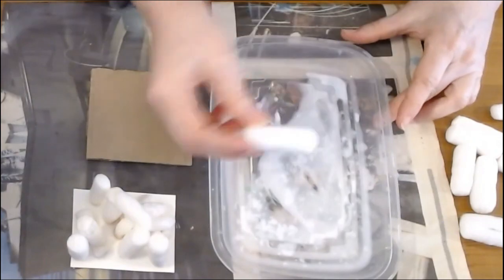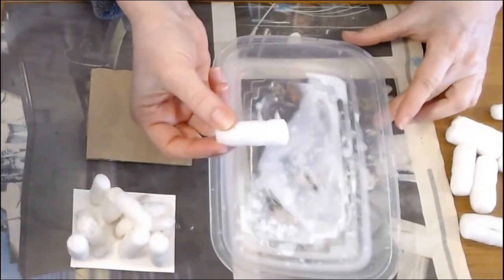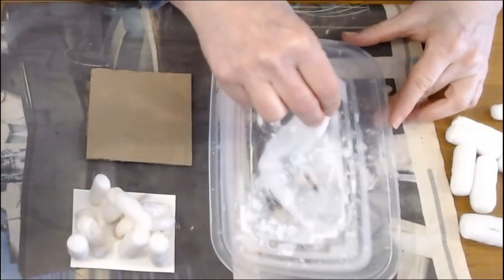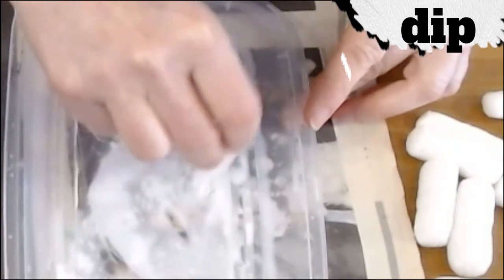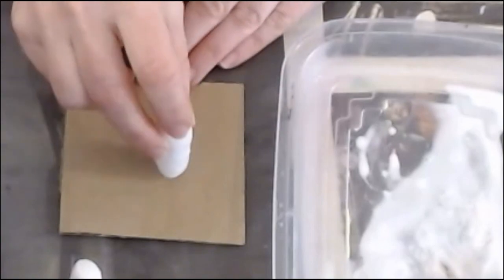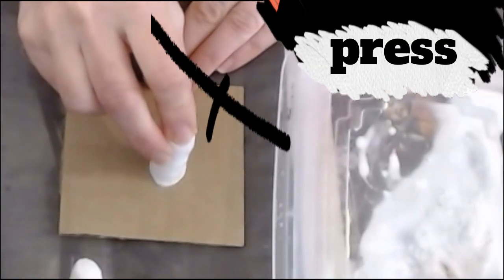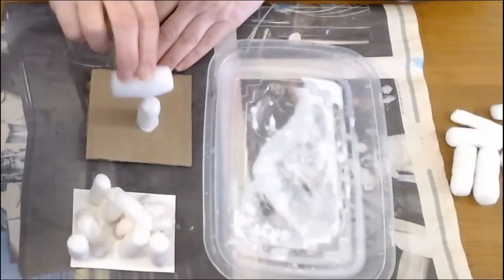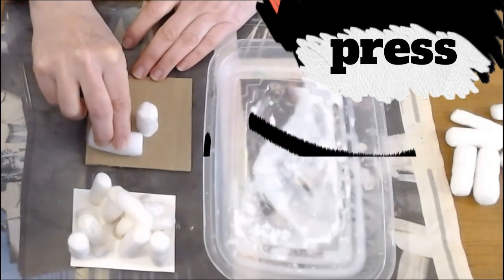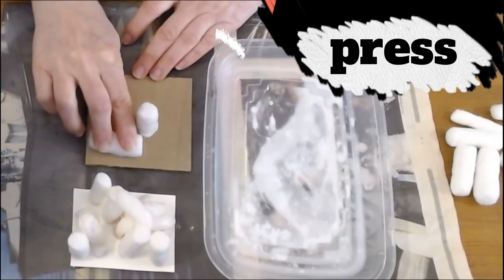So we're going to take our cornstarch packing peanut and we're going to dip it, whichever way you want the glue to be on, and then we are going to press wherever we want. If you want to turn it sideways, you can dip like this and press wherever you want. Just make sure that you press.